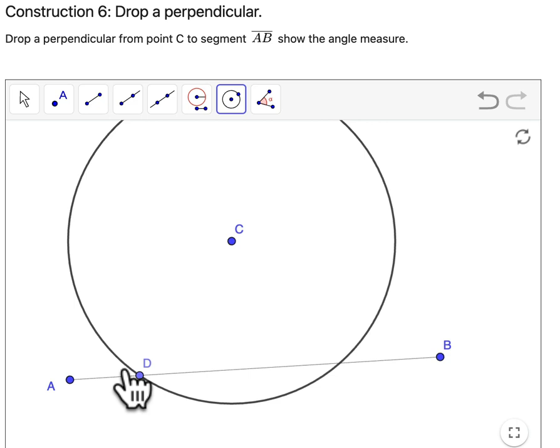So point D is where that circle crosses our segment AB. And I've got another point I can generate right here at point E. All right, got that set.